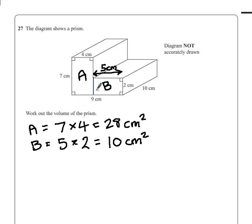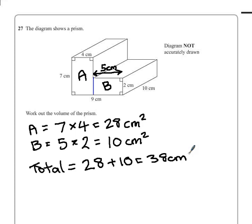With the area of both A and B, if we put those together we will have the area of the cross section of the prism. So we take 28 centimeters squared, add 10 centimeters squared, which gives us 38 centimeters squared as the area of our cross section.